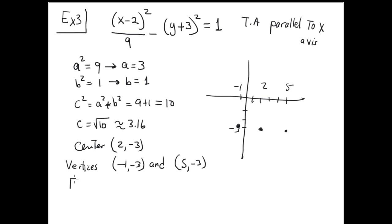The foci are similar but the quantity is not 3, it is 3.16. So the answer is negative 1.16 comma negative 3, and 5.16 comma negative 3.